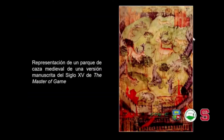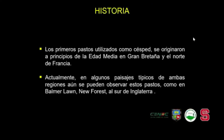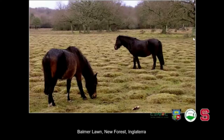También hubo parques de caza medievales, donde en un manuscrito del siglo XV se observa un lugar de pasto rodeado por cercos con animales para la caza. Los primeros pastos utilizados como césped se originaron a principios de la Edad Media en Gran Bretaña y el norte de Francia. Estos eran céspedes más bajos alrededor de los castillos feudales, y algunos de estos pastos se pueden observar en Balmer Lawn, en New Forest, al sur de Inglaterra, con corte mucho más corto, que fueron originando los céspedes que hoy tenemos.